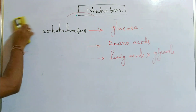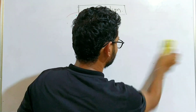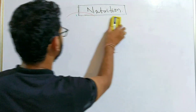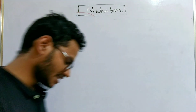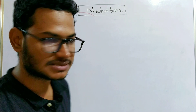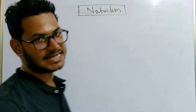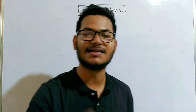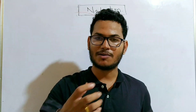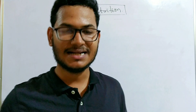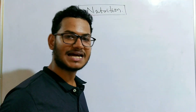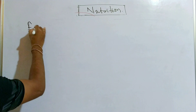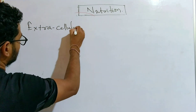Humans are omnivores — we eat both plants and animals as our food. In our body, digestion is extracellular because it does not occur inside a single cell. We are multicellular complex organisms, so the process of digestion takes place outside the cell. This is called extracellular digestion, and it occurs in higher multicellular organisms.